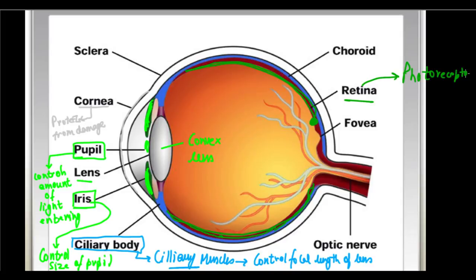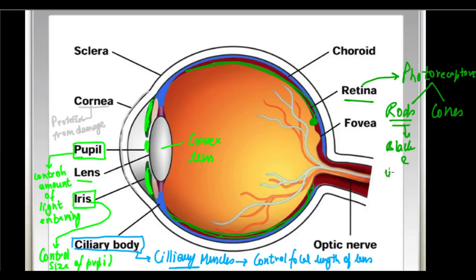On the retina, the retina is composed of photoreceptors which are photosensitive cells. There are two kinds of photoreceptors: you have rods and you have cones. Rods detect black and white light, whereas cones detect colored light.